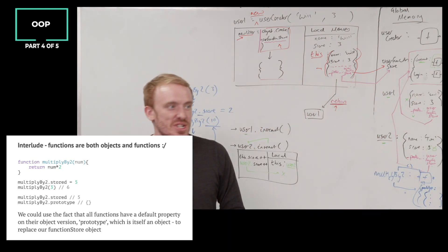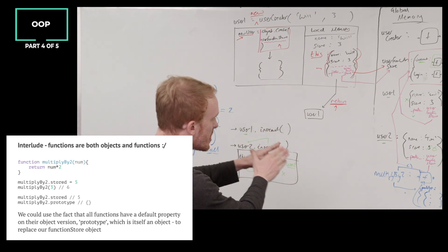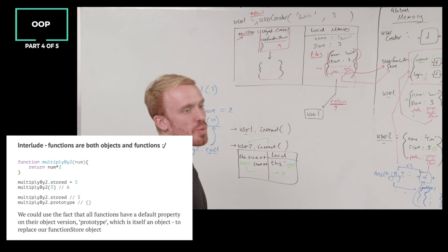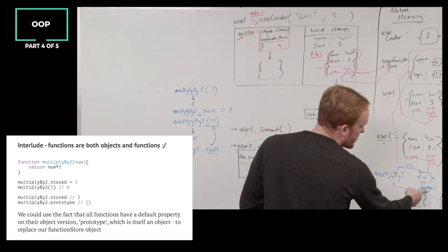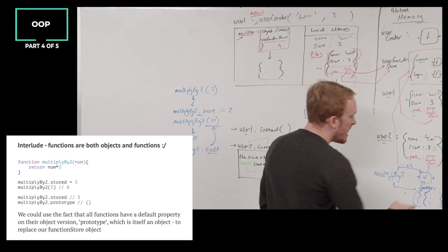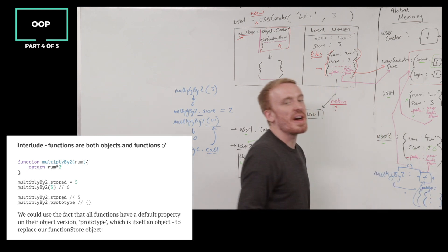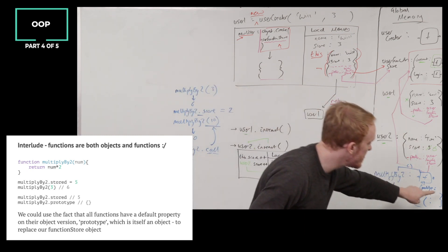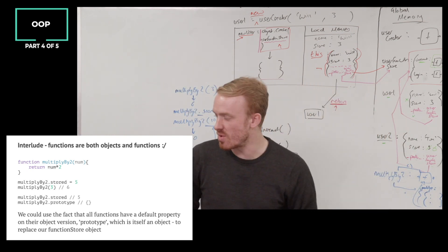We're going to see this play out, but just now know that our functions are both functionality that can be run and objects on which properties can be stored. And by the way, one of those properties by default is called prototype, and we are going to know that that's an object by default, and we're potentially going to store some shared functionality in that little guy there.